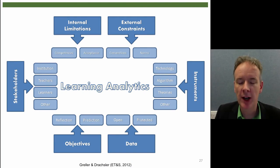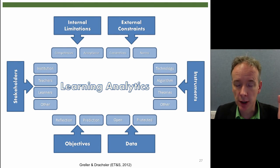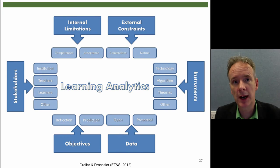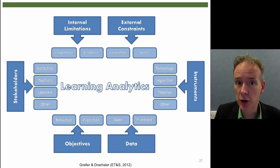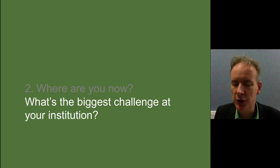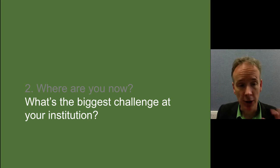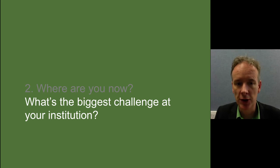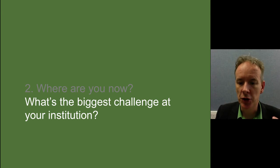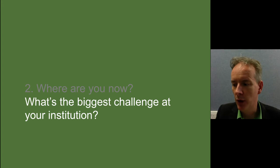To come back to our framework for thinking about learning analytics and where you are now: we've got our stakeholders, the internal limitations, the external constraints — things you ought to do and things you must do — the instruments, the data you're going to capture, and your objectives. What I want you to do is think about all of those things and consider what's the biggest challenge at your institution for achieving what you set out to achieve. Pause the video and write down what's the biggest challenge at your institution.